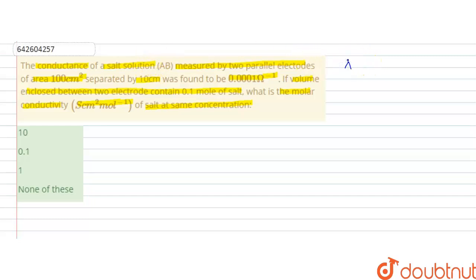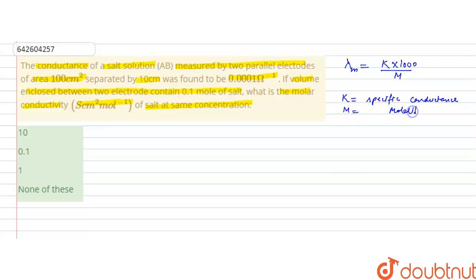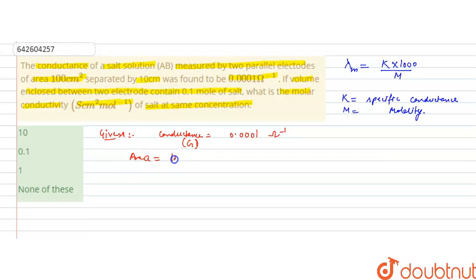Molar conductivity is equal to K into 1000 divided by molarity, where K is the specific conductance and M is the molarity. We are given: conductance G = 0.0001 ohm inverse, area of electrode A = 100 cm², distance between two electrodes L = 10 cm, and 0.1 mole of salt, so molarity is 0.1 molar.